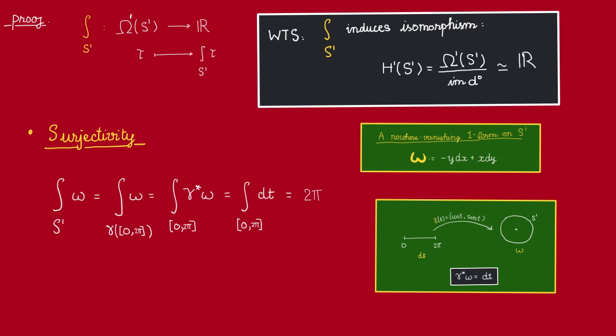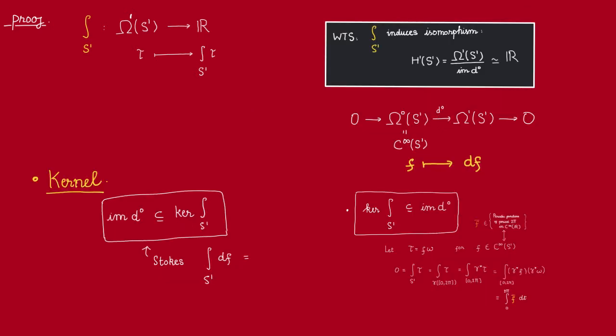Now, to get this isomorphism, we need to show that the kernel of this map is the image of D^0, i.e. the exact one forms. Recall that this map D^0 sends every smooth function f on S^1 to the one form Df. Now, by Stokes' theorem, integral of Df over S^1 is the same as integral of d(Df) over the closed disk. And this latter is zero, because d squared is zero. So, Df lies in the kernel of this integration map. In other words, the image of D^0, these exact one forms, lie inside this kernel.